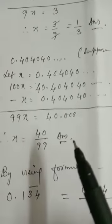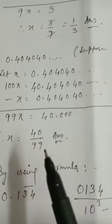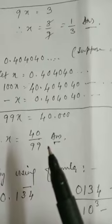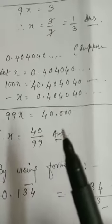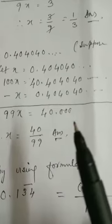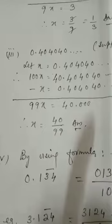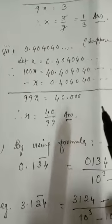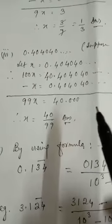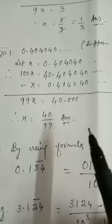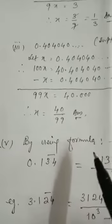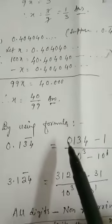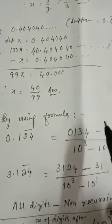So this is your answer. This way you can convert recurring decimals into the form p by q. So two sums I explained this way. You can do this by using a formula also. So one or two sums I will show you how you can convert this by using the formula.